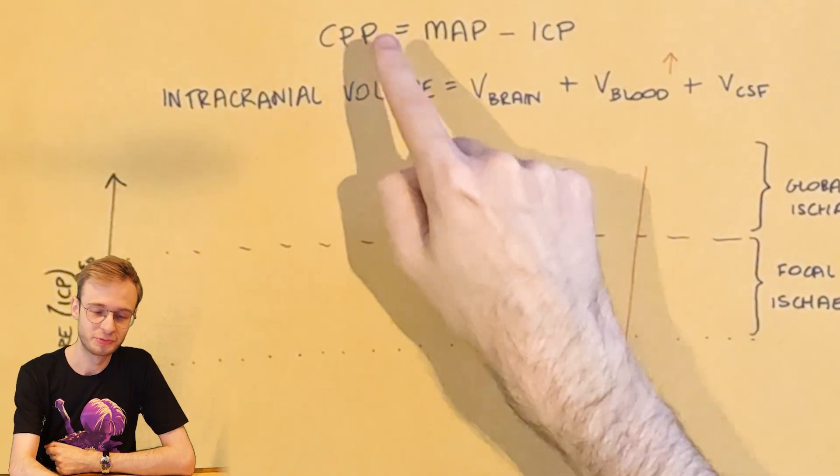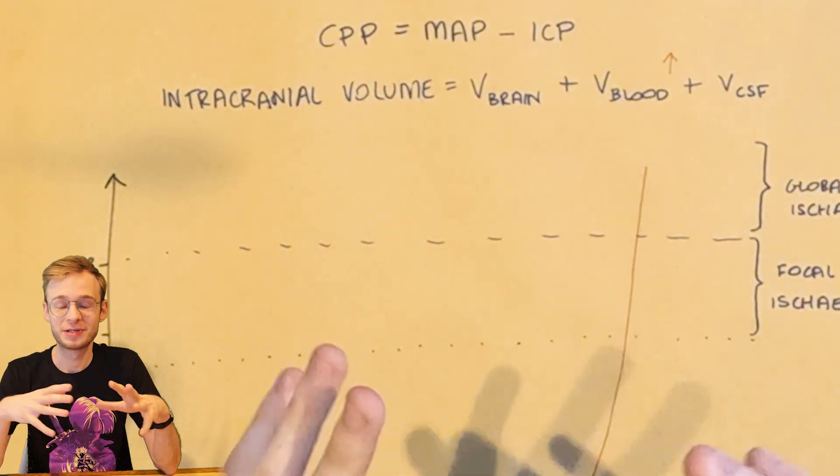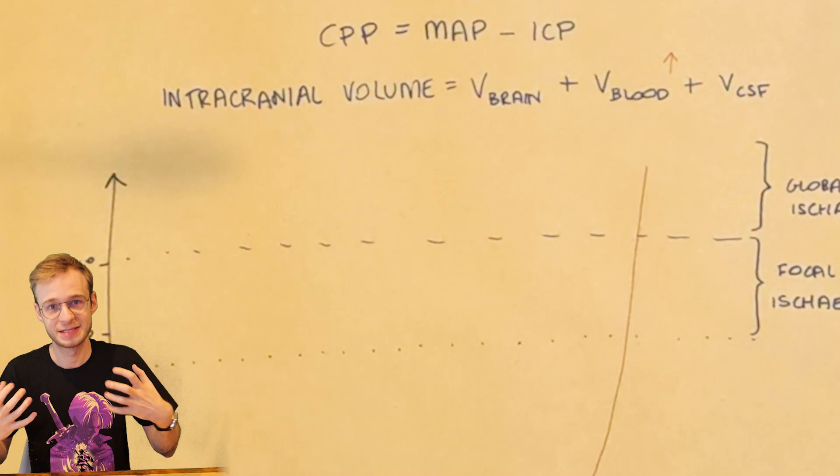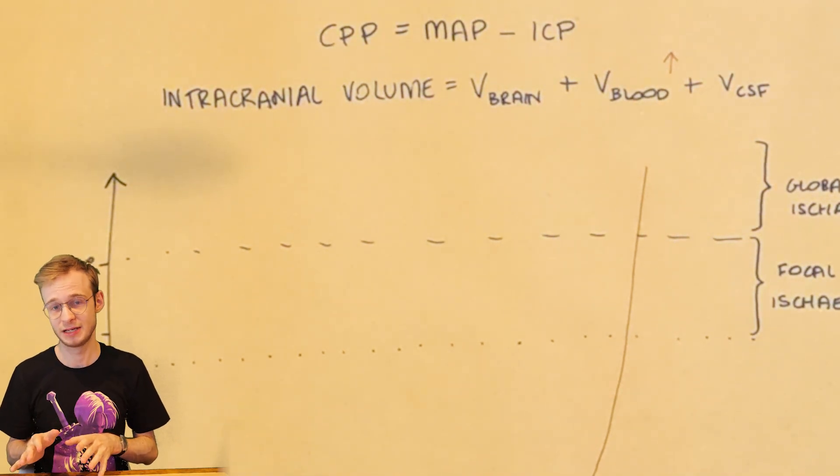Now I know that some of you watching will be shouting out, but there is compensation in mean arterial pressure. This is because the body can trigger what's called the Cushing reflex, which is this last ditch effort by the body to maintain brain perfusion. We'll talk about that in a future video.